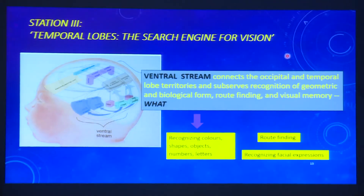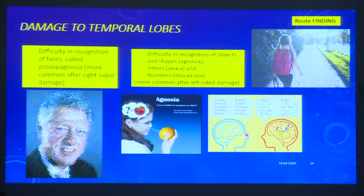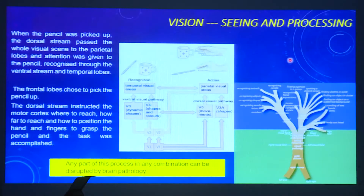What happens if the temporal lobe is damaged? It is the 'what' station — it helps us recognise colours, shapes, objects, routes, and facial expressions. If damaged, we see prosopagnosia, meaning inability to recognise a face. There can also be difficulty recognising objects, shapes, letters, numbers, and difficulty with route finding. These are the many problems we see when these children come to us.